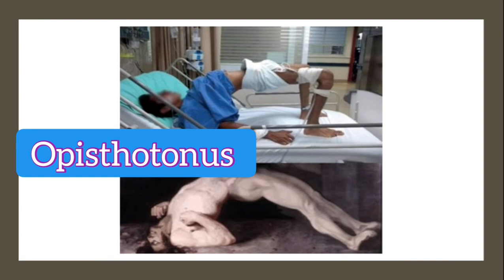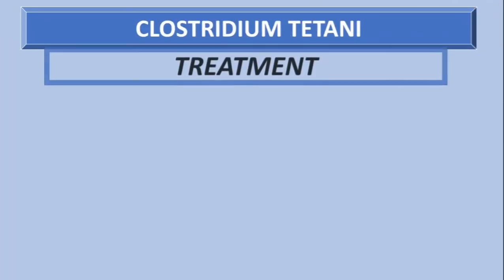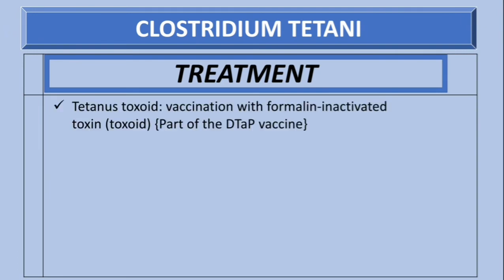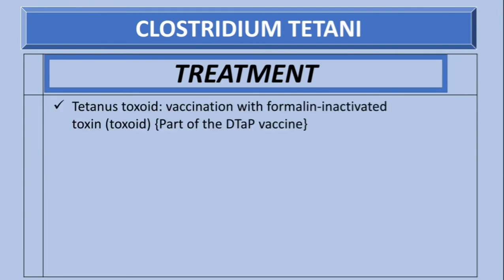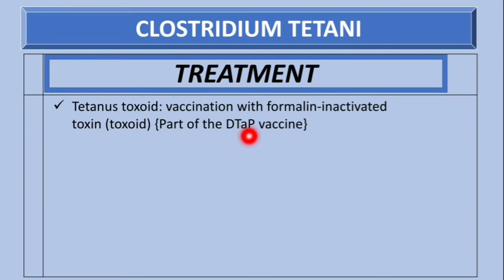For treatment, the first option is tetanus toxoid — a vaccination using a formalin-inactivated toxin, which is part of the DTaP vaccine (diphtheria, tetanus, and pertussis). The second option is antitoxin: human tetanus immunoglobulin, which is a pre-formed anti-tetanus antibody.